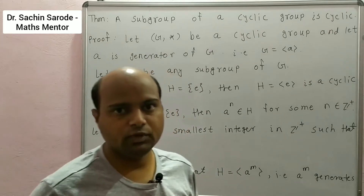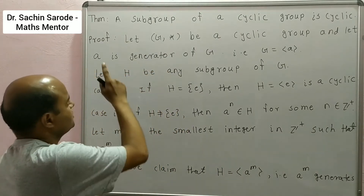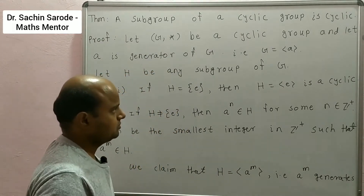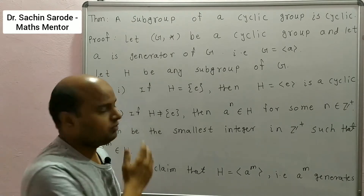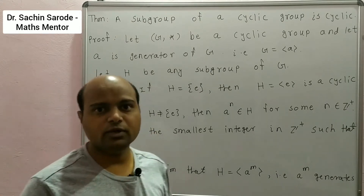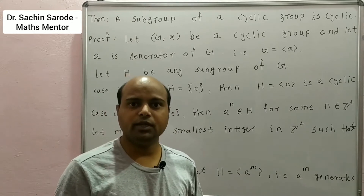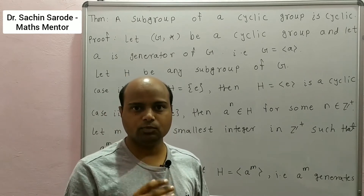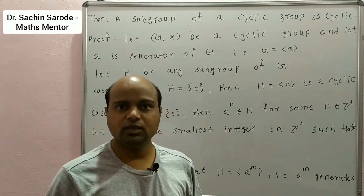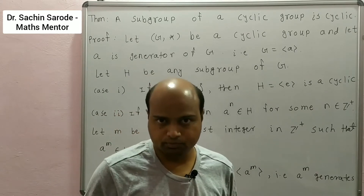Now we will learn another result: a subgroup of a cyclic group is cyclic. What this theorem says is: if we have a cyclic group G, and if we take any subgroup H of G, then H is also a cyclic group.